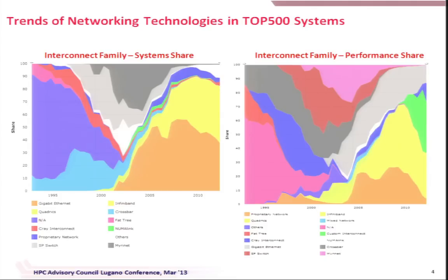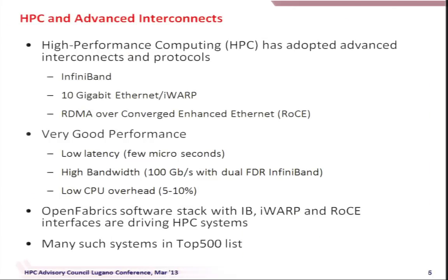In this talk, we'll mostly focus on the commodity side. High-performance computing has adopted advanced interconnection protocols like InfiniBand, 10 Gigabit Ethernet, iWARP which is also getting momentum, and things are moving into 40 Gigabit. The convergence — RDMA over Converged Enhanced Ethernet, or RoCE — is also steadily gaining momentum. They deliver very good performance: latency-wise, we can get a few microseconds; bandwidth, especially with dual FDR InfiniBand, you can get 100 gigabits per second.